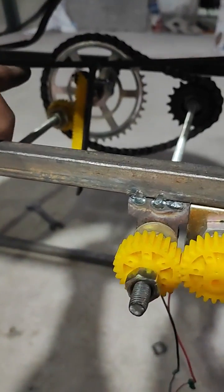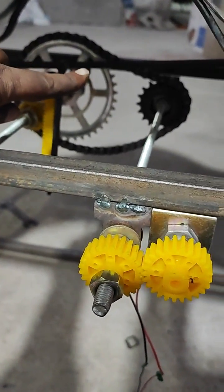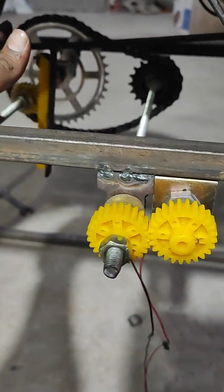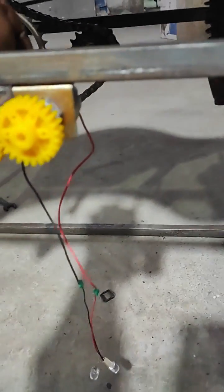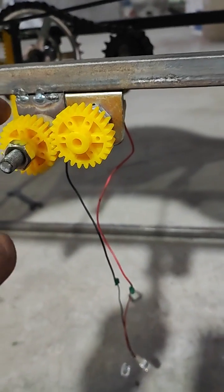The larger spur gear will be rotating the smaller sprocket with the help of chain. This smaller freewheel is again connected to a threaded screw rod to the spur gears.